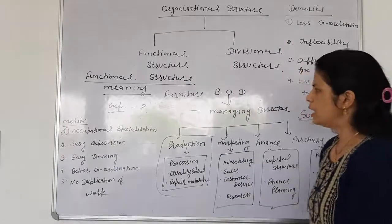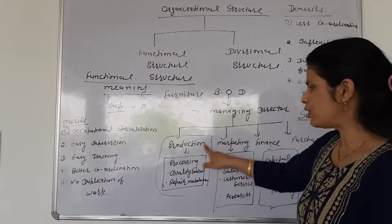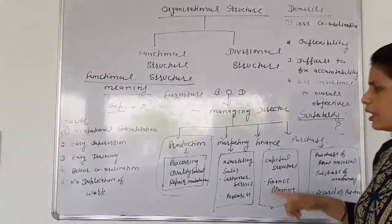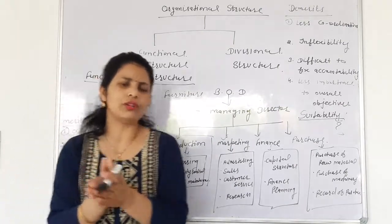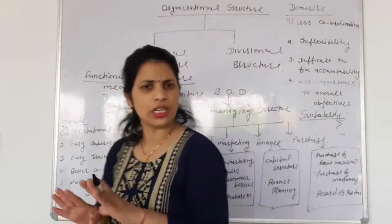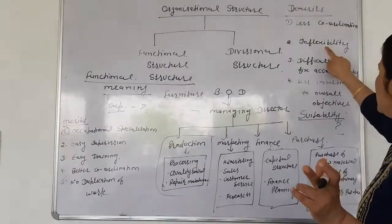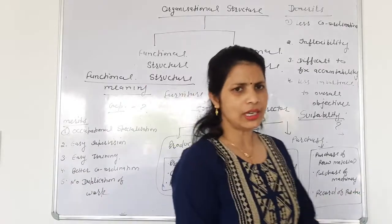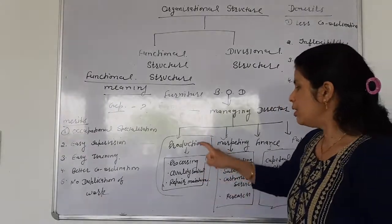No duplication of work — in functional structure there is no duplication or overlapping. Why no overlapping? Because the production department only works in production, marketing only works in marketing, and finance and purchase never happen to do production department work, because every department has a special function and special activities already defined.